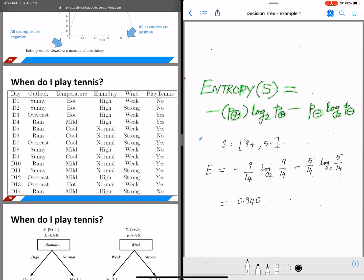So we saw in the previous video that entropy is given by minus probability of the positive class log to the base 2, probability of the positive class, minus probability of the negative class log to the base 2, probability of the negative class.